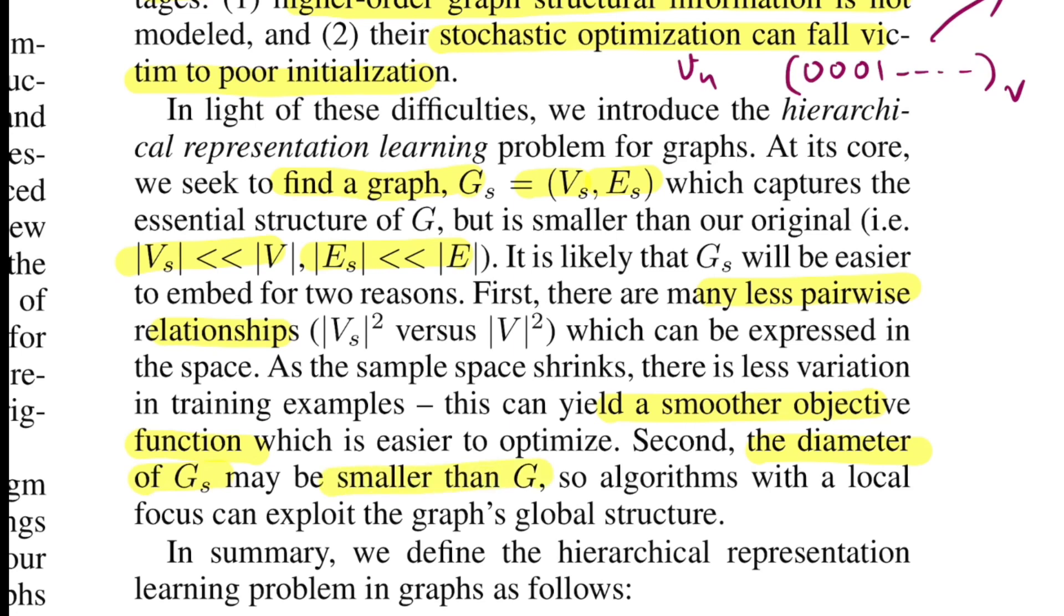Not only this, but also the diameter of GS will be much smaller than G. For those who don't know, diameter in a graph means the maximum distance between any pair of vertices in that graph. If you merge edges and nodes, then chances are things will be closer to each other, so the diameter decreases. But since the way you decrease nodes and edges still preserves the global structure, any embedding algorithm with local focus such as Node2vec and DeepWalk can exploit the global structure of the graph.